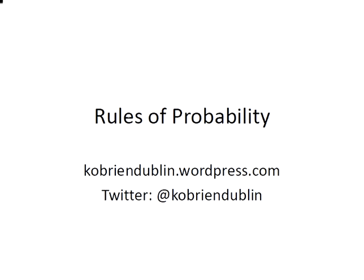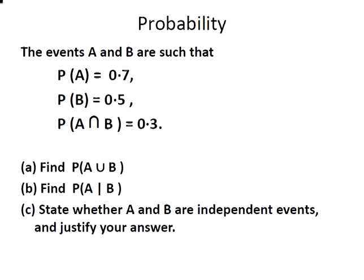In this presentation we're going to look at some of the rules of probability. The events A and B are such that the probability of A is 0.7, the probability of B is 0.5, and the probability of A intersection B is 0.3. The first part is to find A union B, the second part is the conditional probability of A given B, and lastly we have to state whether or not A and B are independent events, justifying our answer.